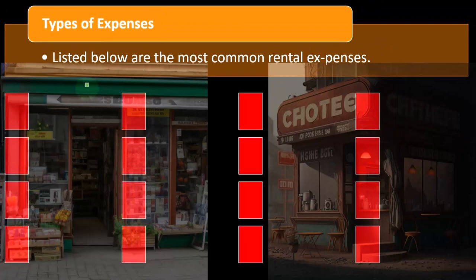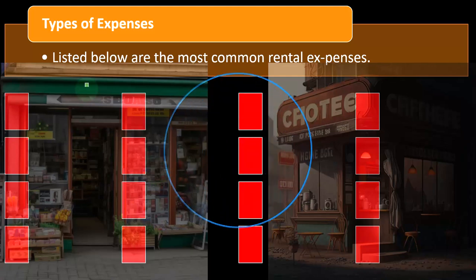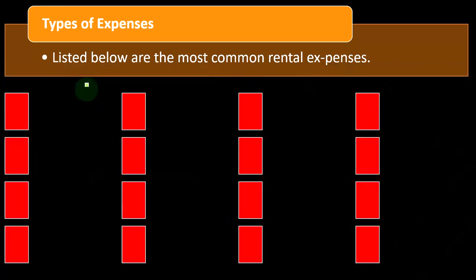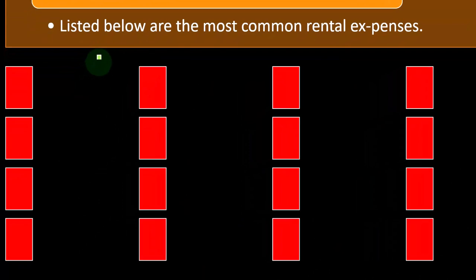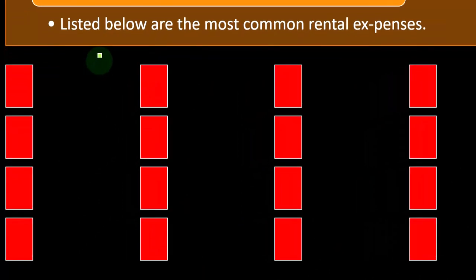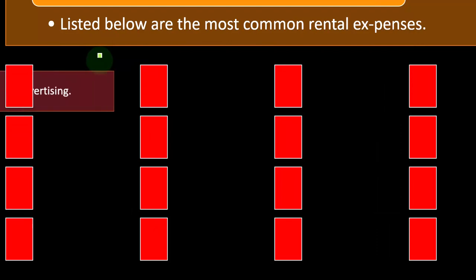Continuing on types of expenses — listed below are the most common rental expenses. Similar to the Schedule C situation with business income, they usually make sense. Rental expenses are typically those ordinary and necessary expenses you needed in order to generate the revenue, so that we're taxed on net income as opposed to gross income.